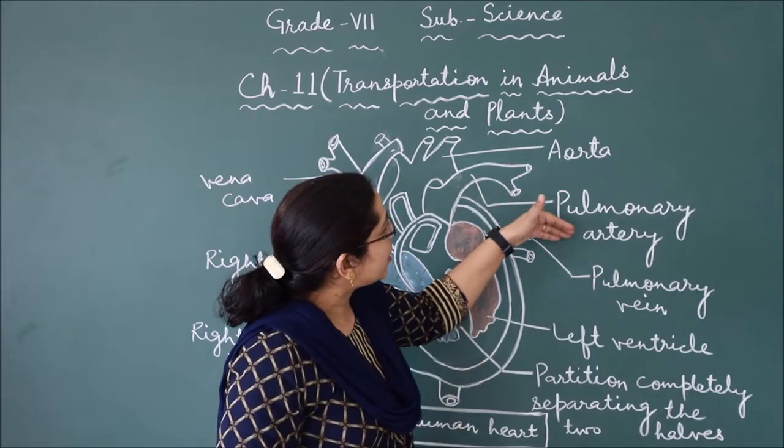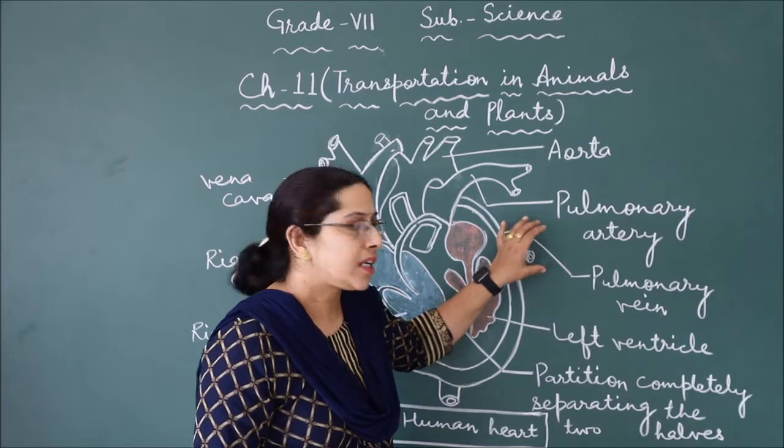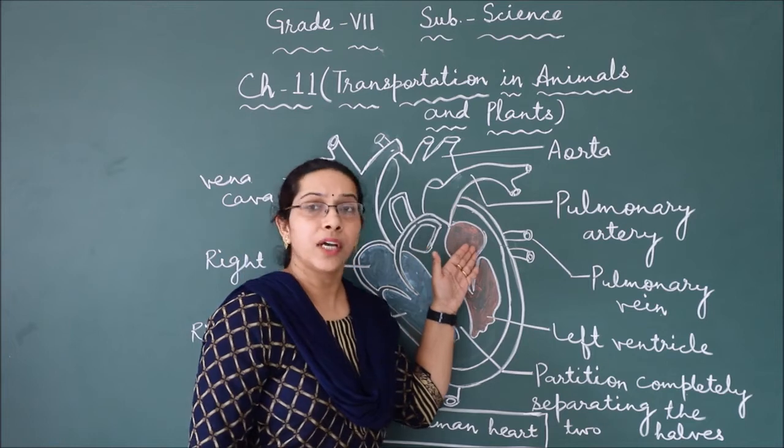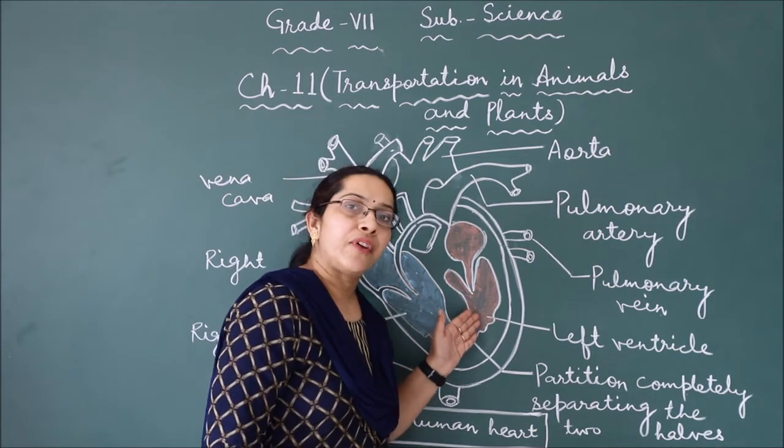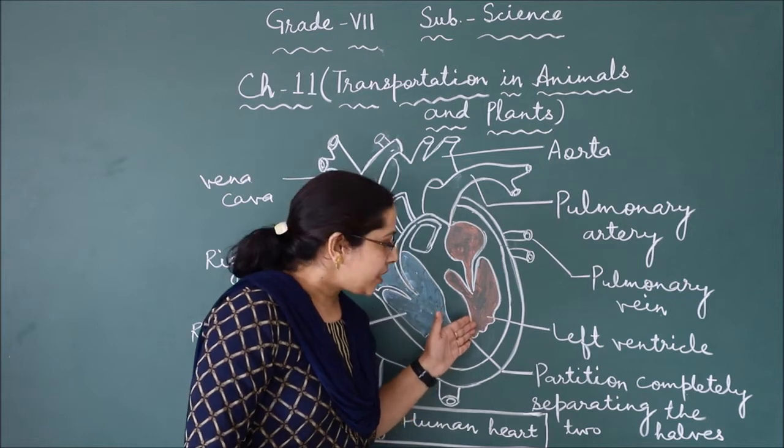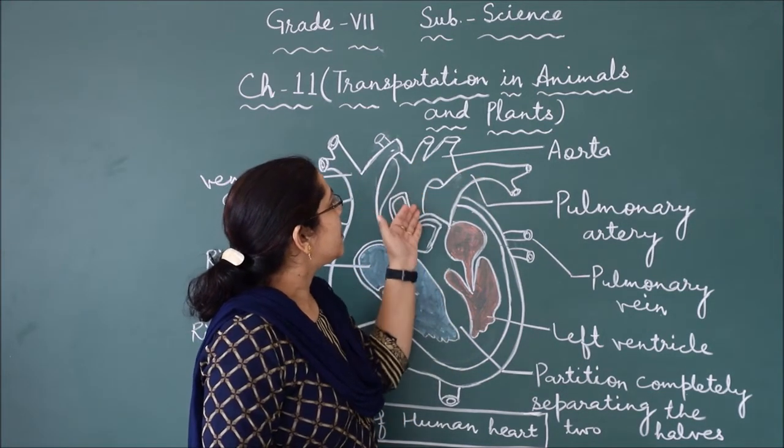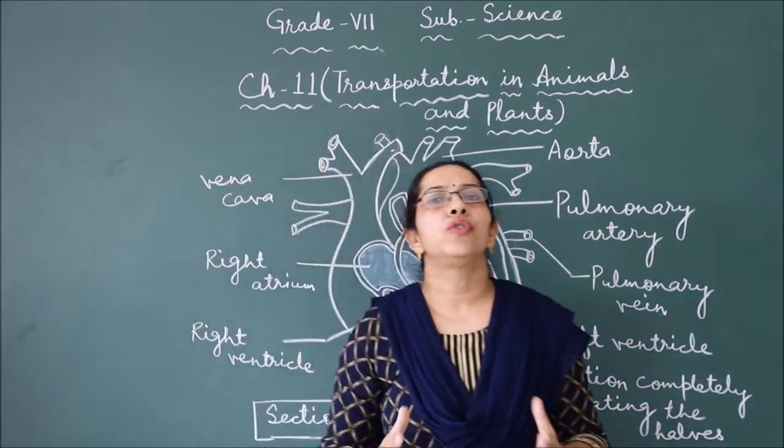Now where will this oxygenated blood flow? From the pulmonary vein, the blood will enter into the left atrium, then go to the left ventricle, and then from the left ventricle through the aorta, the pure blood will reach different body parts.